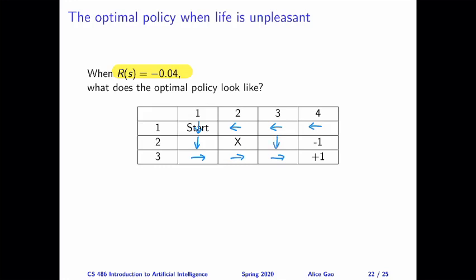For S2,3, we're going to try to go there. This policy is more conservative than before — we're not willing to take as much risk, and we're willing to explore a bit more to reach the better goal state. But this is not the most conservative policy. For example, in state S2,3 we choose to go down, which still carries a chance of stepping into the minus-one state. Similarly, for S1,4, choosing to go left still carries a 10% chance of going down into the minus-one state. So these are certainly not the most conservative options, but more conservative than before.